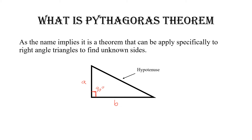If we call the two other sides b and c, the hypotenuse is the longest side. Pythagoras' theorem states that the hypotenuse squared is equal to the sum of the other two sides squared. So if we call the hypotenuse a, and the other two sides b and c, then a squared equals b squared plus c squared.